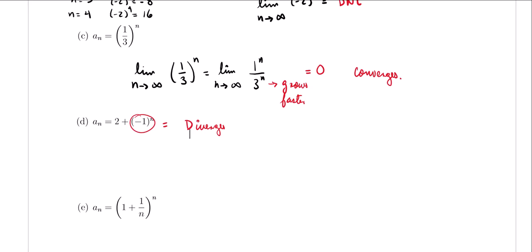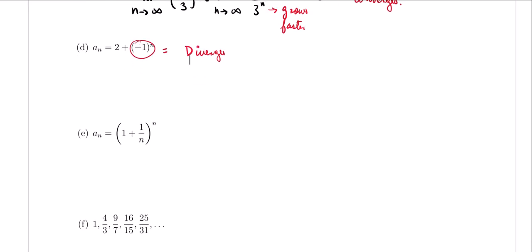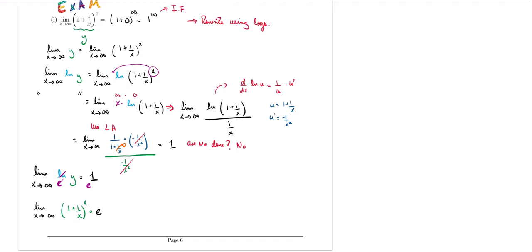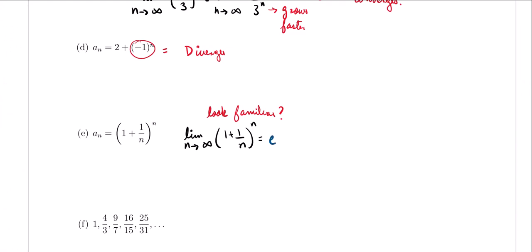What about the last one? We have a_n equals (1 + 1/n)^n. If we take the limit as n approaches infinity, do we get a limiting value, or does the sequence diverge? I'll give you a hint — does this limit look familiar? It should, because we encountered it when we were learning L'Hôpital's rule. It was one of the trickier problems requiring implicit differentiation. The limit as x approaches infinity of (1 + 1/x)^x is Euler's number e. So the sequence converges.